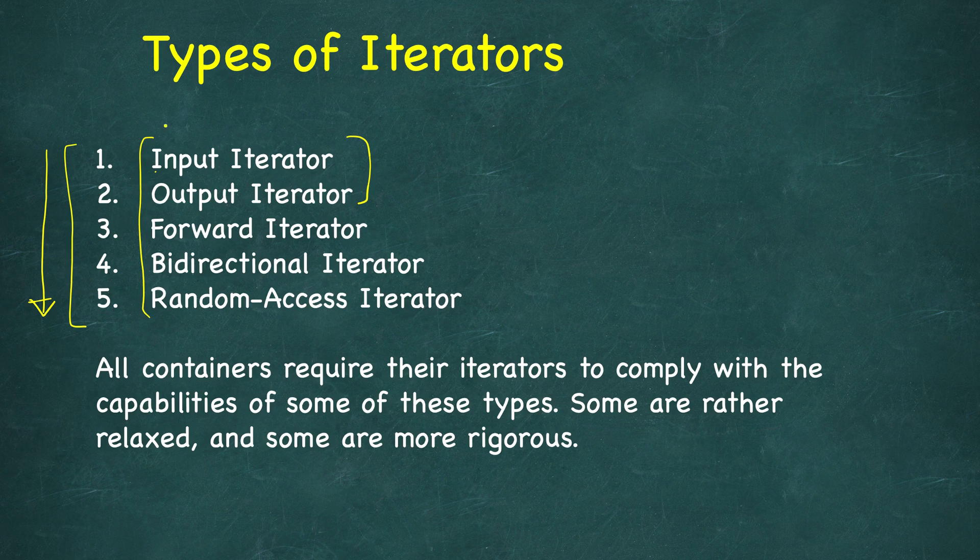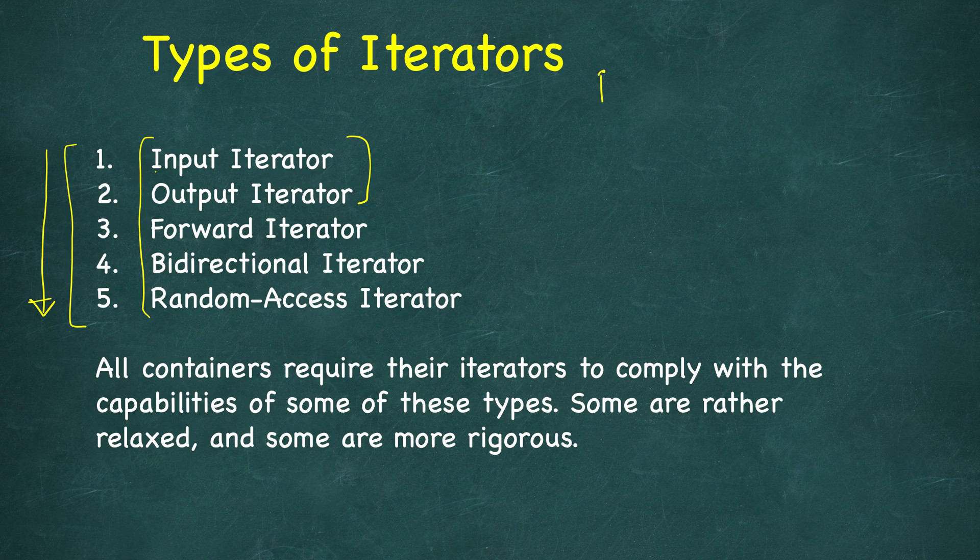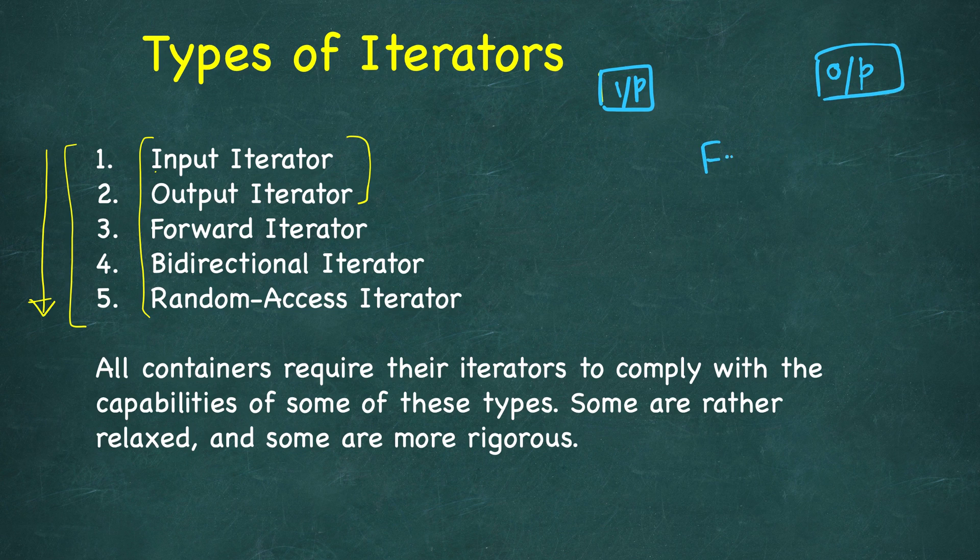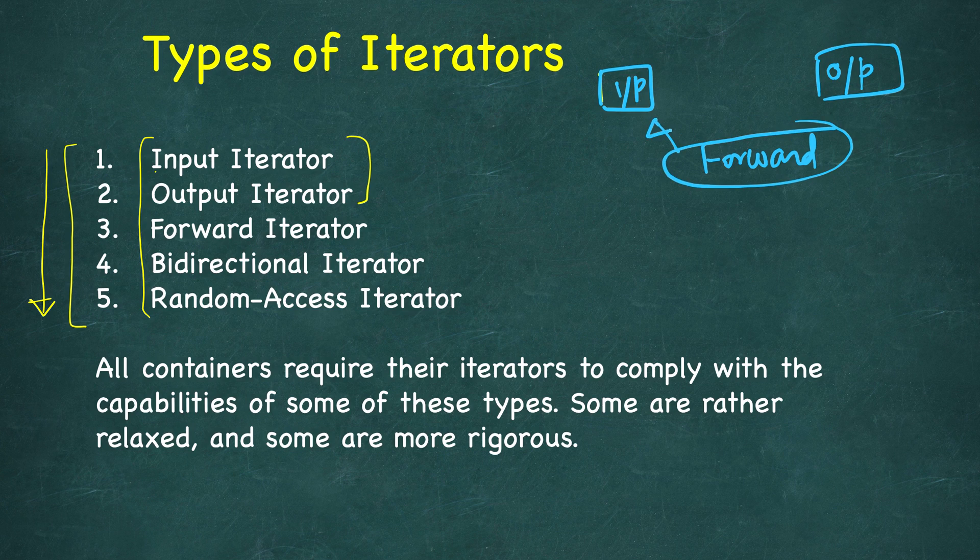Now as promised, let's come back to this slide to summarize. We can draw a diagram like this. This is input iterator, this is output iterator. In order to implement forward iterator, we need to combine the capabilities of these two.